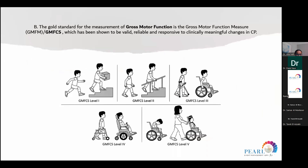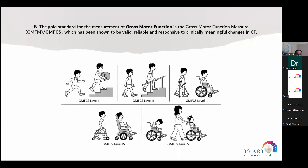The gold standard for measuring function is the Gross Motor Function Classification System, which has been shown to be valid, reliable, and responsive to clinical management changes in cerebral palsy. It uses a one-to-five scale: Level 1 is when the patient can walk, stand, and go up stairs without any problem. Levels 4 and 5 indicate the patient uses a wheelchair and is fully dependent on a caregiver. The same measures can be applied to upper limbs, most commonly used by occupational therapists and physiotherapists.